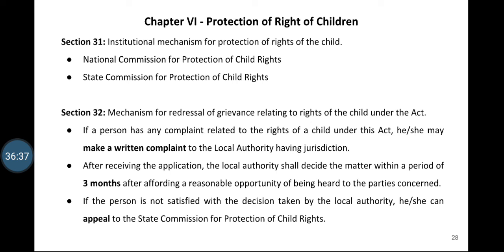If a person has any complaint related to the rights of the child under this Act, he or she may make a written complaint to the local authority having jurisdiction. After receiving the application, the local authority shall decide the matter within a period of three months after hearing the concerned parties. If the person is not satisfied with the decision taken by the local authority, he or she can appeal to the state commission for protection of child rights. So if you have any complaint, you can directly go to the local authority — like the panchayat — and give a written complaint.